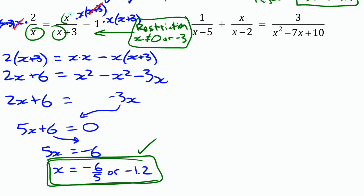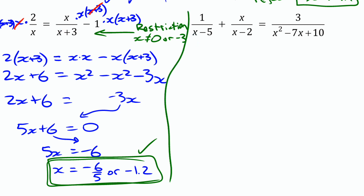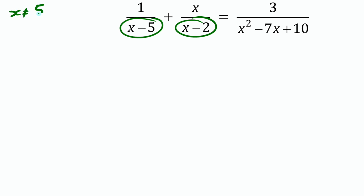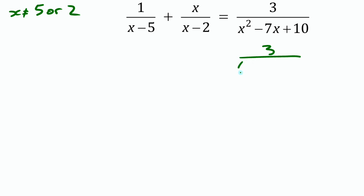For the last equation, let's first identify all the restrictions. We can see two denominators x minus 5 and x minus 2, so x cannot be 5 or 2. We also need to factor the third denominator — it factors to x minus 2 times x minus 5, which introduces no new restrictions. So our only restrictions are x cannot be 5 or 2.